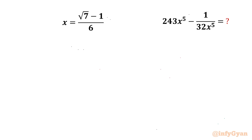Welcome back to Infigyan, my dear friends. In this video we have one very interesting question from algebra. We have to evaluate 243x⁵ minus 1 over 32x⁵, where x is (√7 minus 1) over 6.